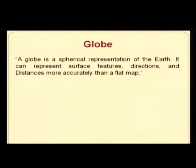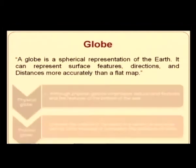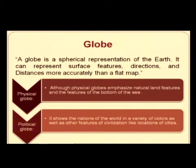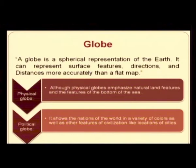A globe is a spherical representation of the earth. It can represent surface features, directions, and distances more accurately than a flat map. A physical globe emphasizes natural land features and the features of the bottom of the sea, whereas a political globe shows the nations of the world in a variety of colors as well as other features of civilizations like locations of cities.